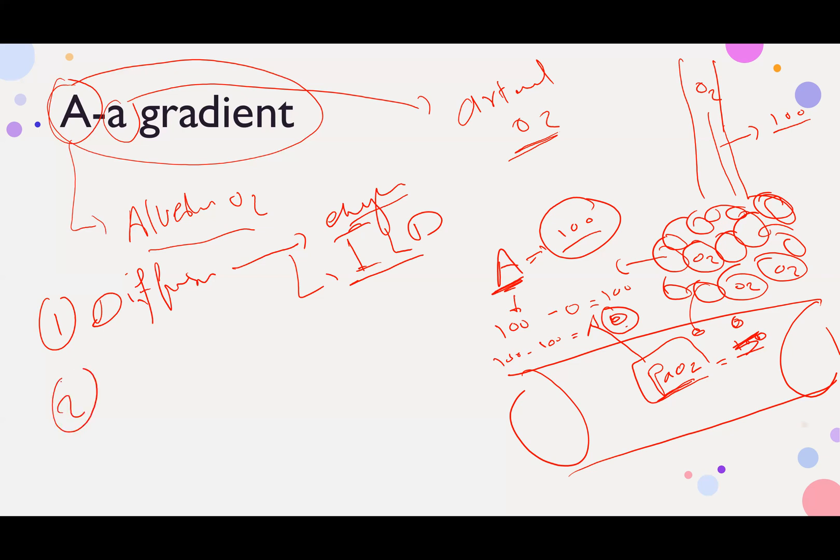The second cause of high A-a gradient is VQ mismatch. The example is pulmonary embolism, because there is no blood to the lung, and the A-a gradient will be high. Also asthma, asthma exacerbation.